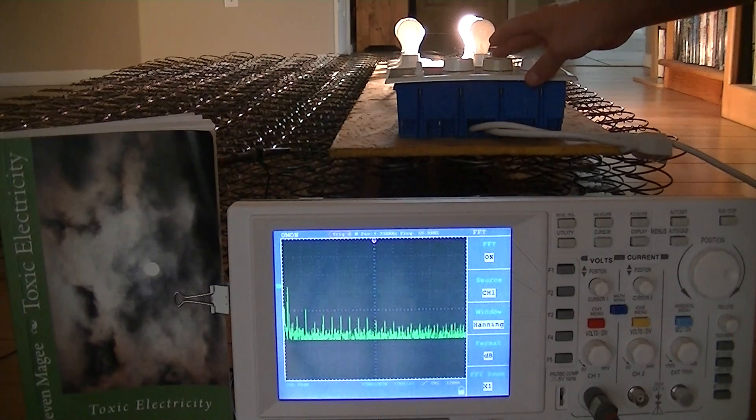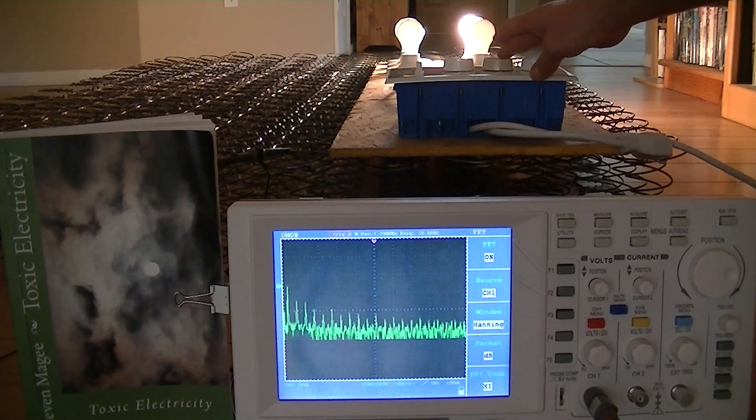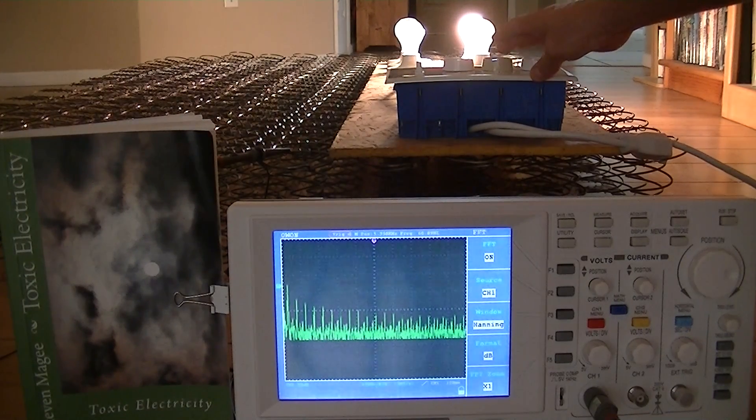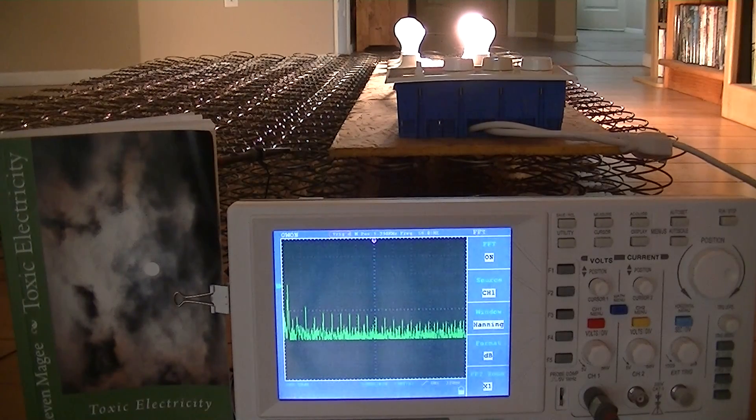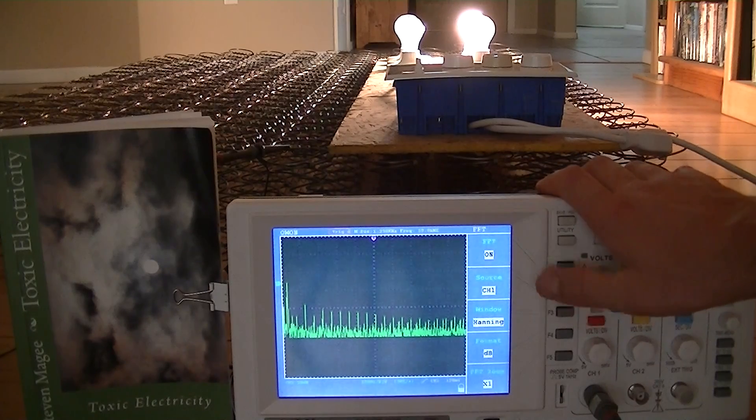So I'm going to turn on our second lamp dimmer and see if that has any effect. So I'm slowly increasing it and we can see that the harmonic spikes actually change. So let's turn the harmonic analyzer off.